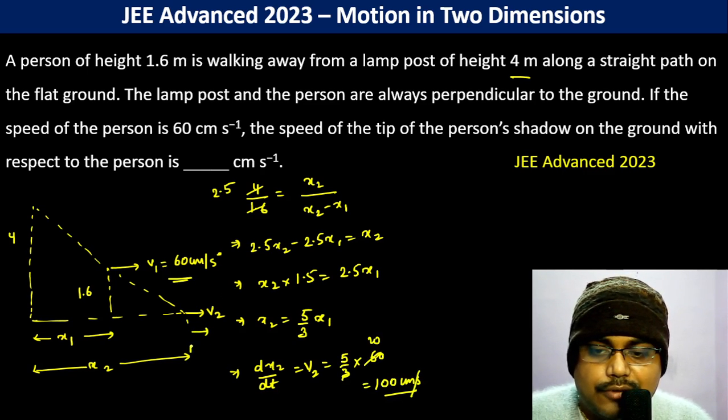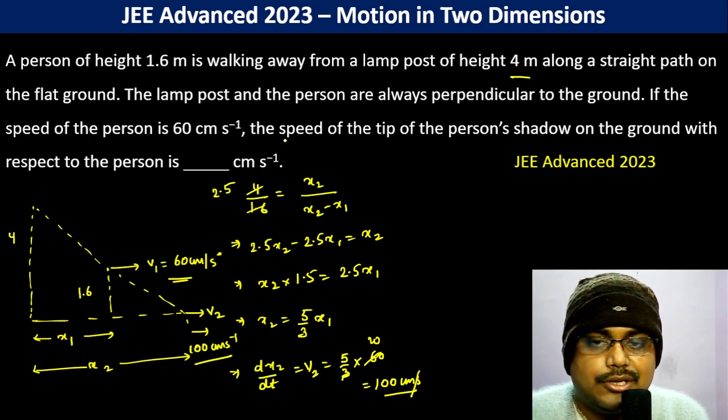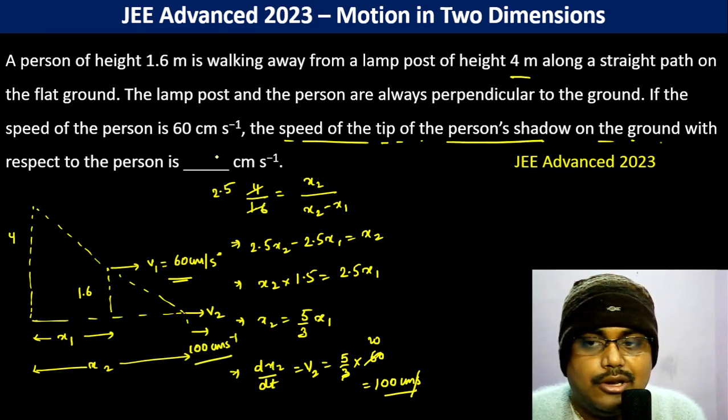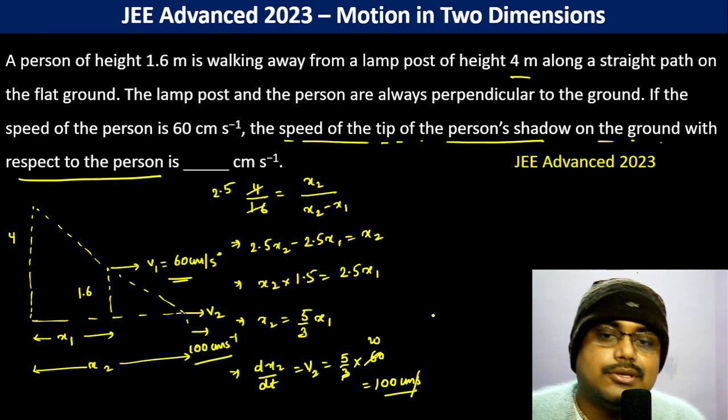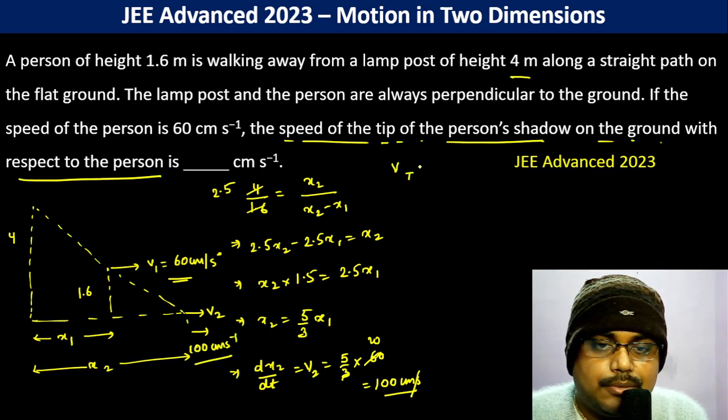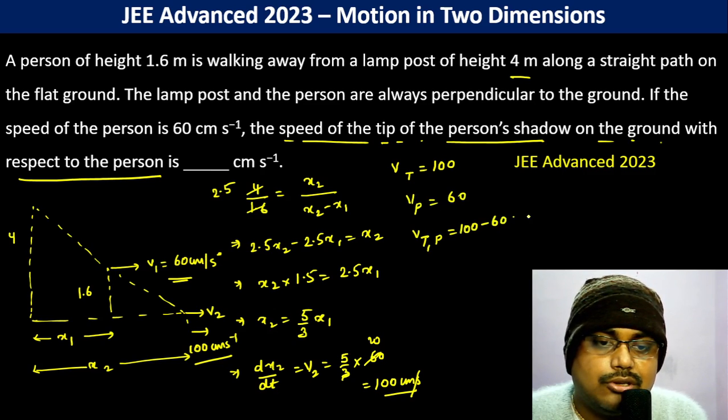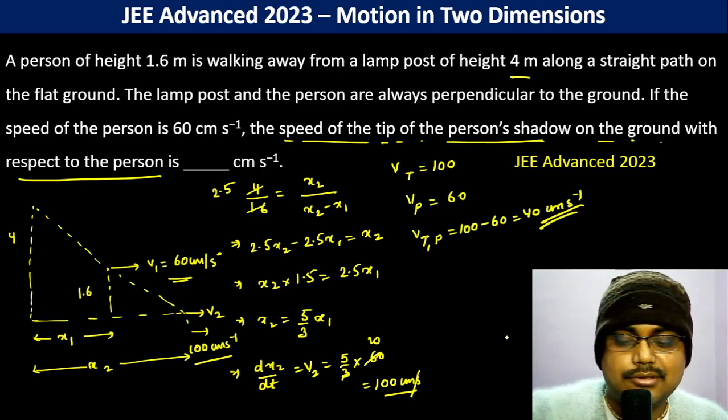However, it's mentioned here the speed of the tip of the person's shadow on the ground with respect to the person. So velocity of tip is 100, velocity of person is 60, so velocity of tip with respect to person becomes 100 minus 60 which is 40 centimeters per second. So 40 is the answer.